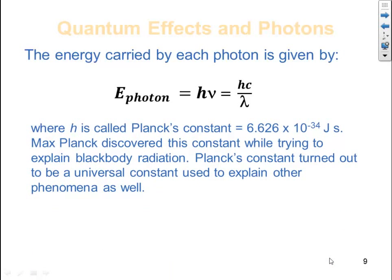Where h is called Planck's constant, which is equal to 6.626 times 10 to the negative 34 joule seconds. Max Planck discovered this constant while trying to explain blackbody radiation. Planck's constant turned out to be a universal constant used to explain other phenomena as well.